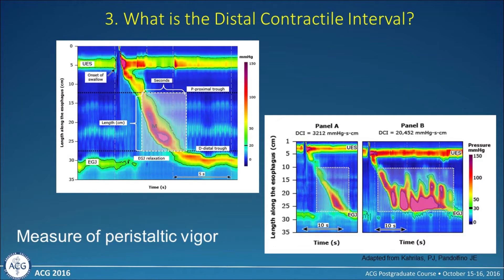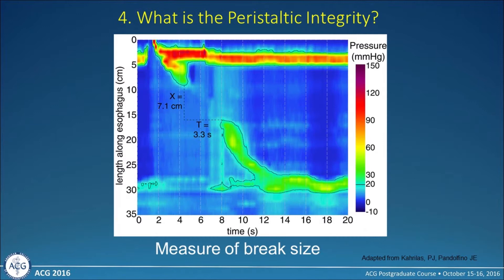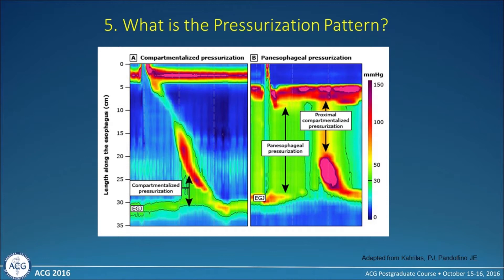The distal contractile integral has to do with the vigor of the swallow — how strong is it? The peristaltic integrity is whether there are breaks in the swallow as it travels down: are they large breaks, greater than five centimeters, or is it a smooth swallow from the upper esophageal sphincter to the lower? Lastly, the pressurization pattern: based on issues affecting the integrity of the lower or upper esophageal sphincter, you can have compartmentalized pressurization or pan-esophageal pressurization.